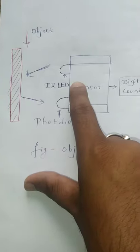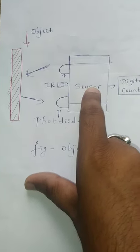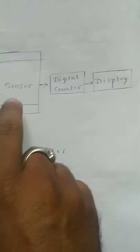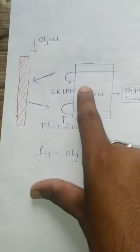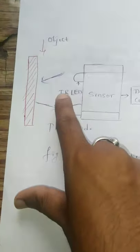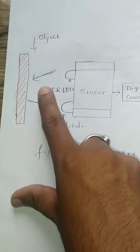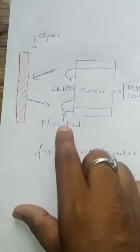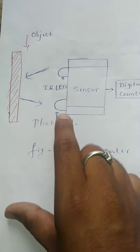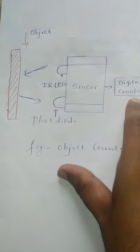When an object is present in front of the sensor, the IR LED light is reflected and the photodiode conducts and increments the count of the counter.